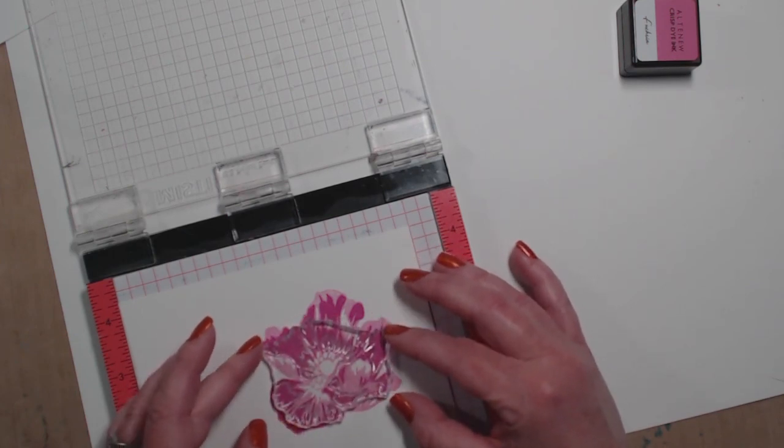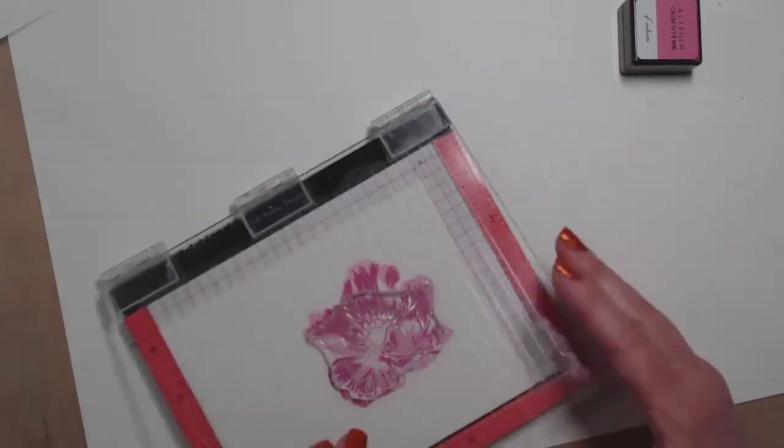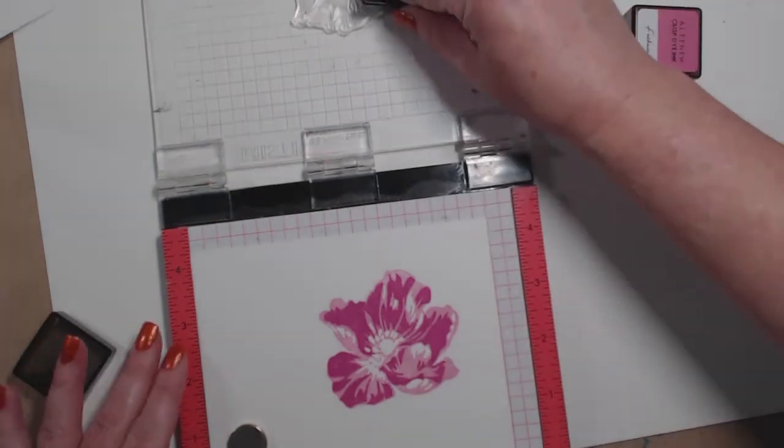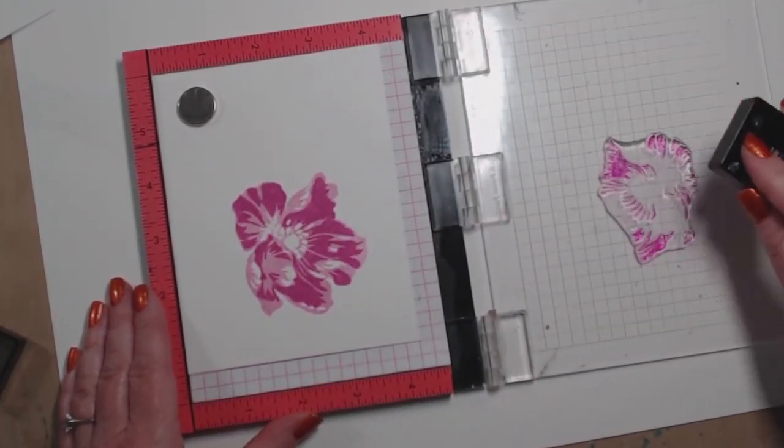Here I'm lining up the final flower layer. I'm going to use the very darkest pink that came in the set and ink that up.